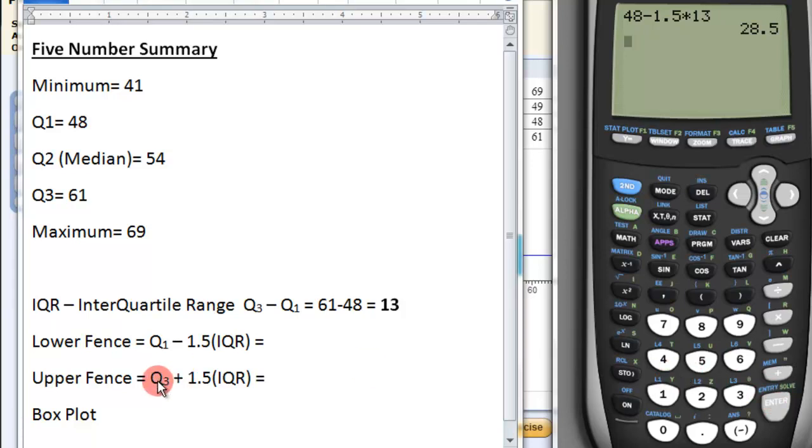And then I'll do upper fence, which is quartile 3, which is 61, plus 1.5 times the 13. So those are the lower fence, 28.5, and the upper fence, 80.5.